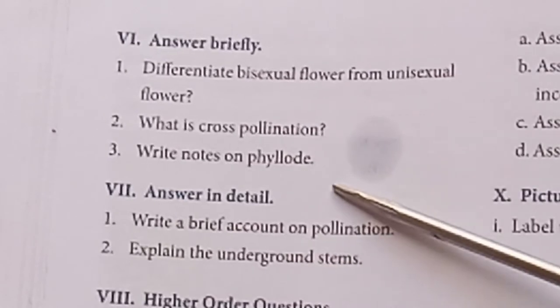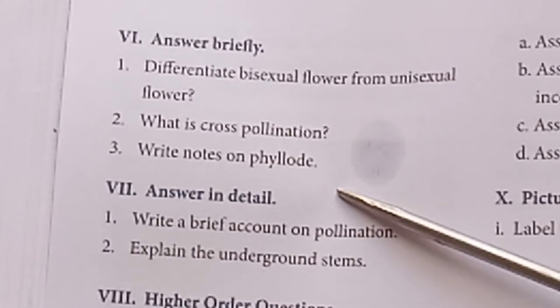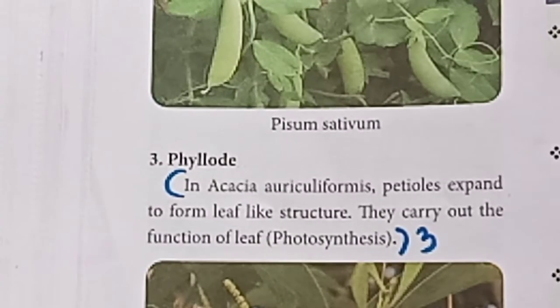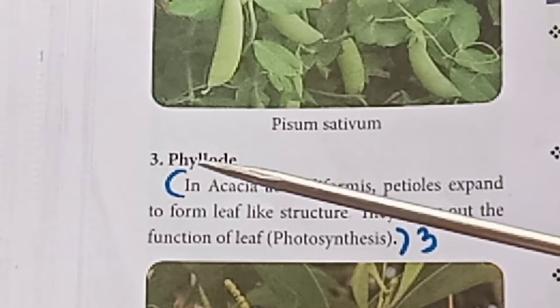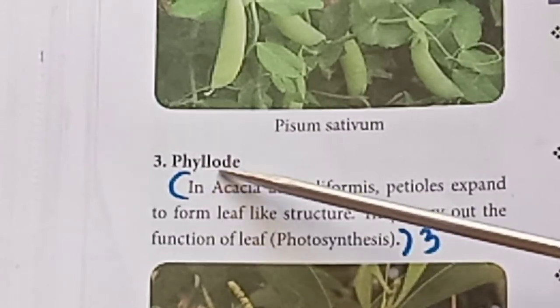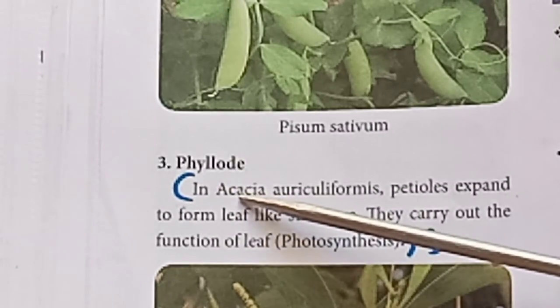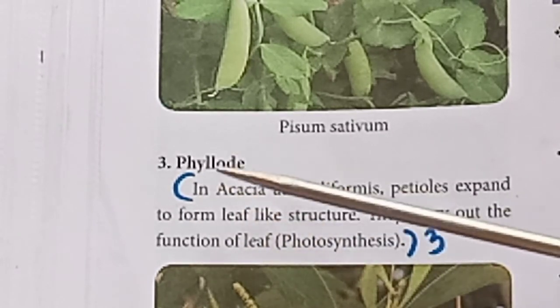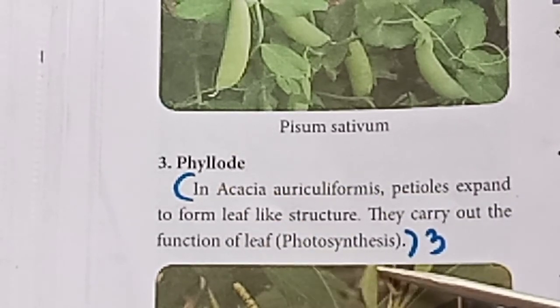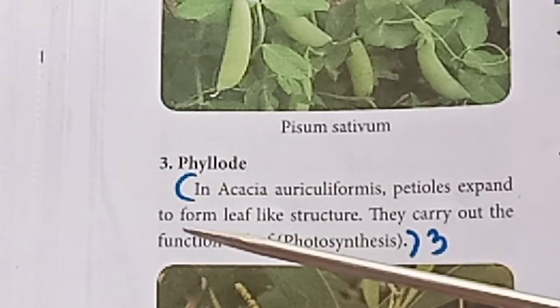Write notes on phyllode. In Acacia auriculiformis, the petioles expand to form leaf-like structures called phyllodes. They carry out photosynthesis and perform the functions of a normal leaf.